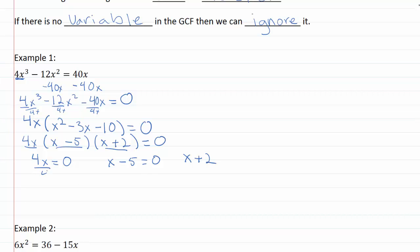Okay, so looks like x = 0 is one of my solutions. And here if I add 5 to both sides I'll come up with x = 5 is another solution. Oops, equals zero. And so this one when I subtract 2 from both sides I come up with x = -2 is another solution.